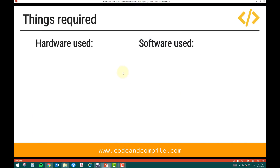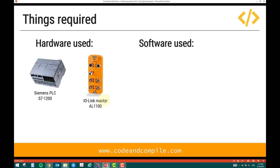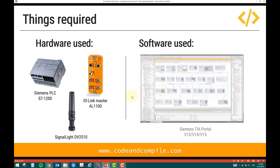So what are the things required for this application? You need a Siemens PLC, an IO-Link Master because this is an IO-Link device, and a signal light — the one I'm using is the DV2510. The software I'm using is Siemens TIA Portal; you can use version 13, 14, or 15.